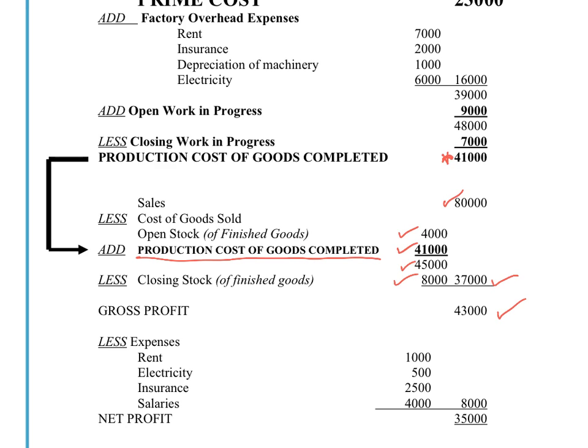The expenses in the profit and loss account will be the apportioned figures discussed earlier — the portions of expenses not allocated to the factory. Here we have rent $1,000, electricity $500, insurance $2,500, and salaries $4,000, totalling $8,000. Deducting that from gross profit leaves a net profit of $35,000.